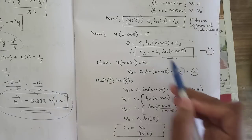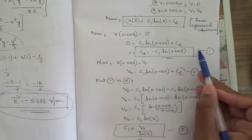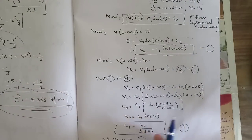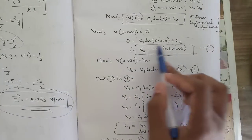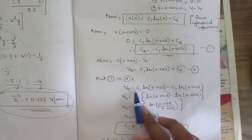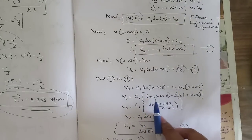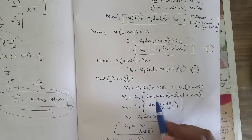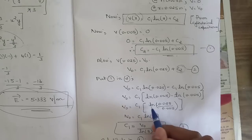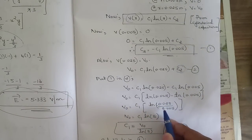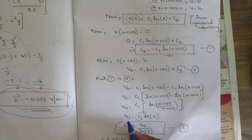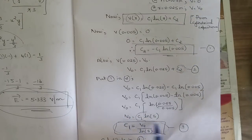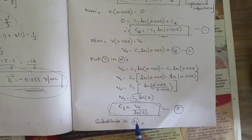Substituting Equation 1 into Equation 2: V₀ = C₁ ln(0.025) - C₁ ln(0.005) = C₁ [ln(0.025) - ln(0.005)] = C₁ ln(0.025/0.005) = C₁ ln(5). Therefore C₁ = V₀ / ln(5) — call this Equation 3.